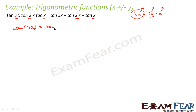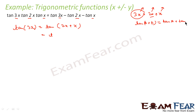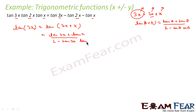So we start with: tan 3x = tan(2x + x). We know that tan(a+b) = (tan a + tan b) / (1 − tan a · tan b). So this becomes (tan 2x + tan x) / (1 − tan 2x · tan x). This equation has tan 3x, tan 2x, and tan x — everything is there, so let's solve it.